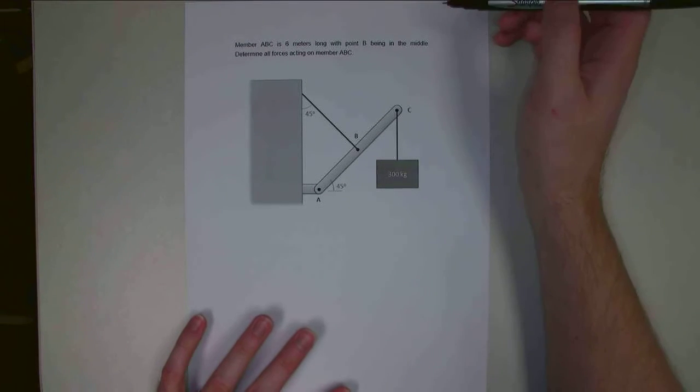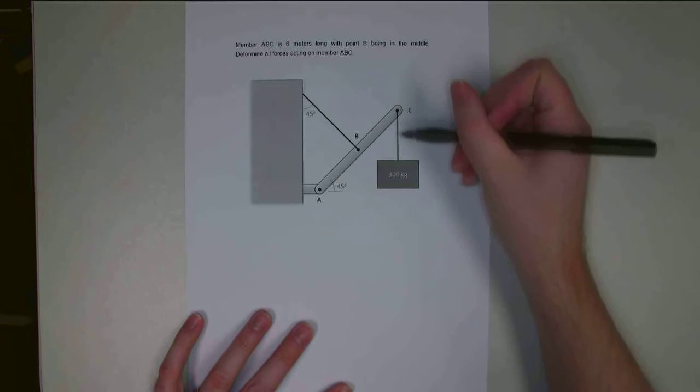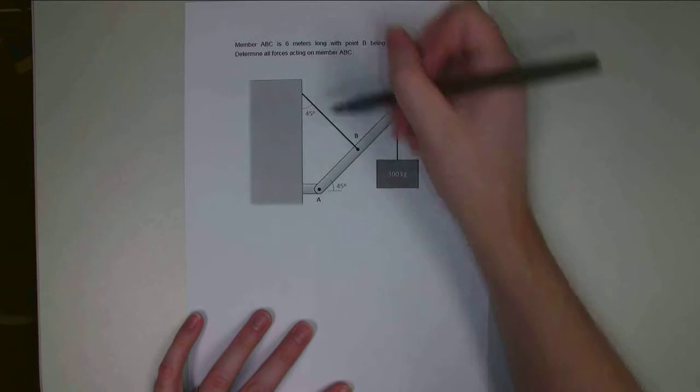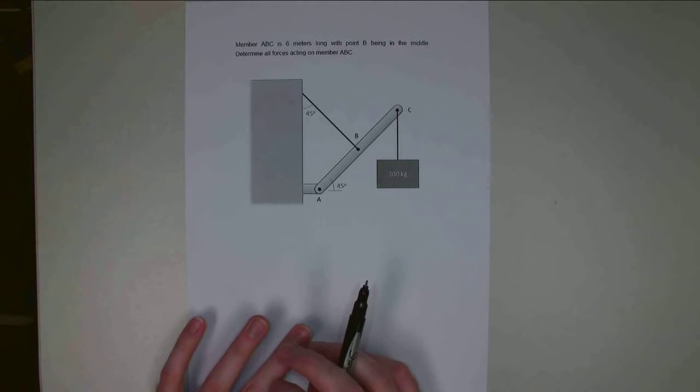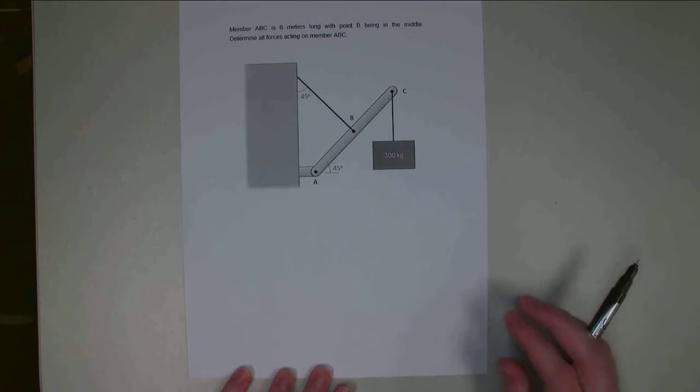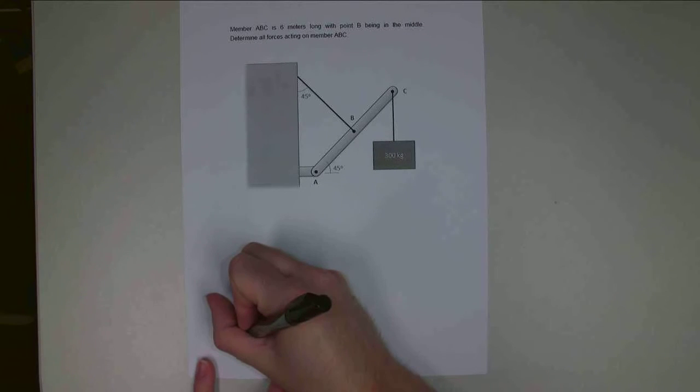So we are asked to determine all forces acting on member ABC. We're going to have the gravity force here, a tension force from the cable, and X and Y components of a force down here at the base. This is an extended body equilibrium problem, and step one is to draw our free body diagram just as normal.